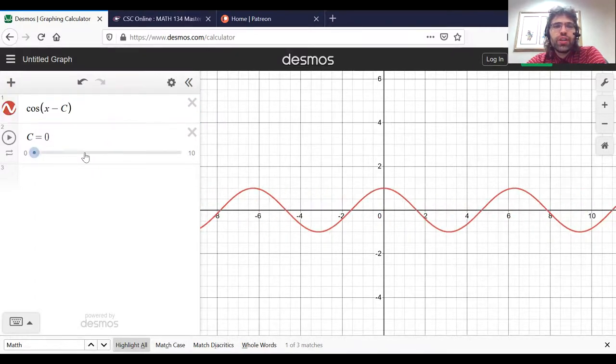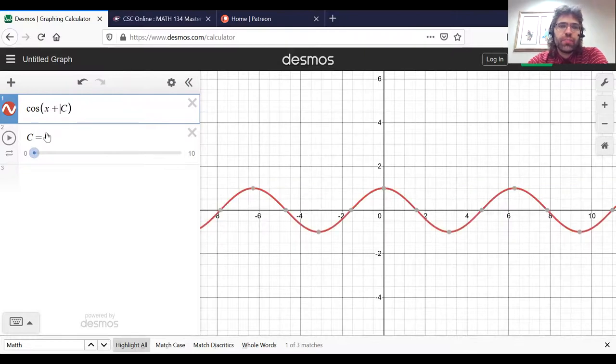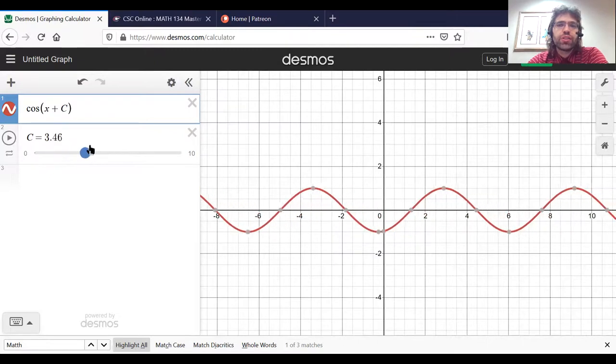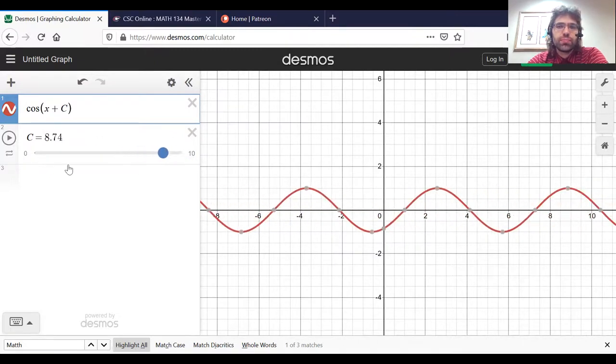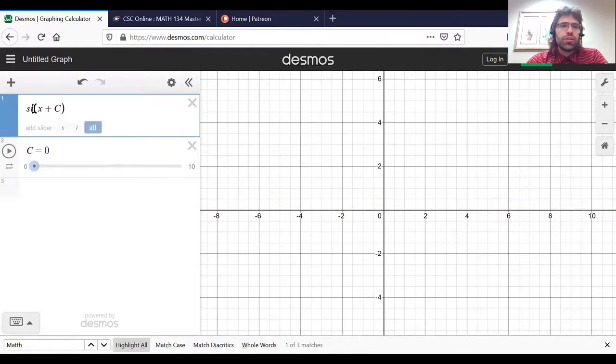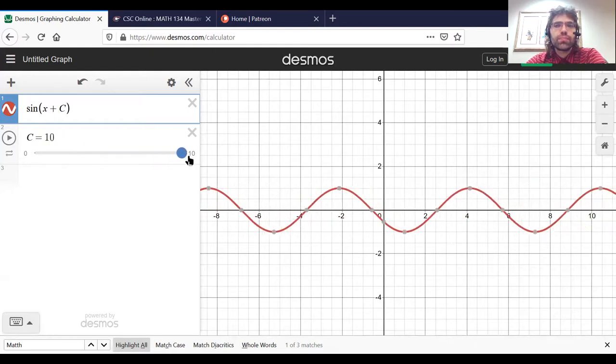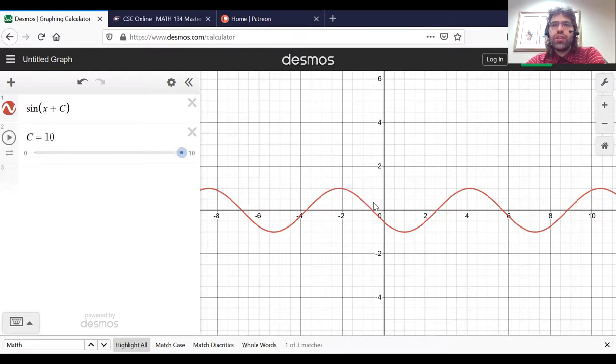If instead of subtraction you have addition, that's going to push the curve to the left. And that's true for the sine as well. When the curve is pushed to the right or pushed to the left, that's called phase shift.